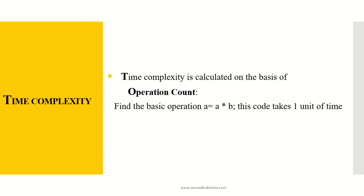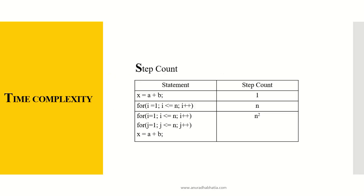Time complexity is calculated on the basis of operation count. Find the basic operation: A equals A times B. This code takes one unit of time because it has only one operation or execution statement. Now let's take a time complexity example calculated on step count. For the statement x equals A plus B, it is a single statement, so the step count is 1.